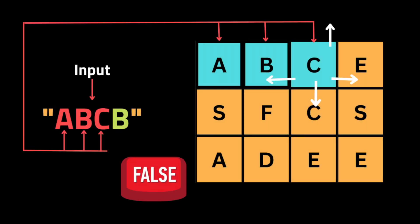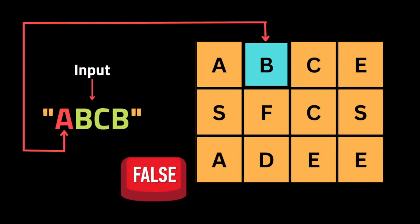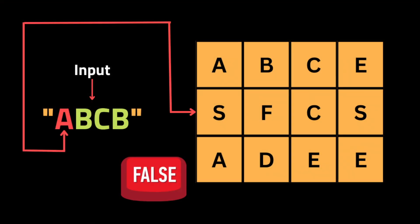There is a case where we check all surrounding cells and none of them contain the next letter. For example, if we're searching for a word and we find A, B, and C but then cannot find the next letter in any direction — up, down, left, or right — we return false and backtrack to the previous cell to try a different path. If the first cell doesn't contain the starting letter, we move to the next cell and repeat the process. If all possible paths are exhausted without finding the word, we return false.